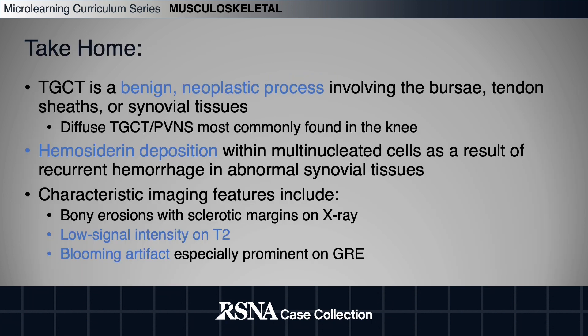In conclusion, TGCT is a benign neoplastic process involving the bursa, tendon sheaths, or synovial tissues. In particular, diffuse TGCT, formerly known as PVNS, is most commonly found in the knee. Hemosiderin deposition is often seen within multinucleated cells as a result of recurrent hemorrhage in abnormal synovial tissues. Characteristic features on imaging include bony erosions with sclerotic margins on x-ray, low signal-intensity lesions on T2-weighted imaging, with an especially prominent blooming artifact on gradient echo.